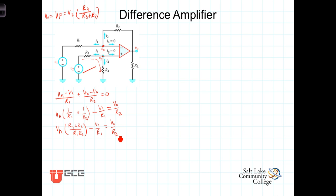Now, we're going to multiply both sides of the equation by R2 to solve for V out. V out is equal to V sub n times R1 plus R2 over R1 minus V1 times R2 over R1.